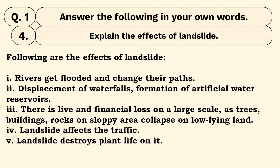Question number four: explain the side effects of landslide. Rivers flood and change their path, displacement occurs, waterfalls form, artificial water reservoirs are created, water blockage occurs on roads, and there is life and financial loss. Trees, buildings, and rocks all slide down the slope. Landslide affects traffic and destroys plant life on the slope.